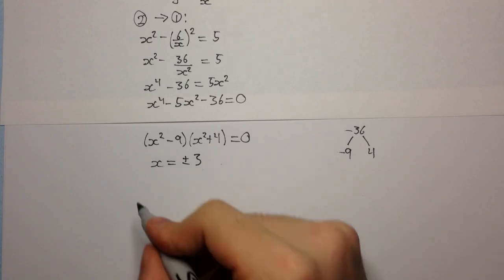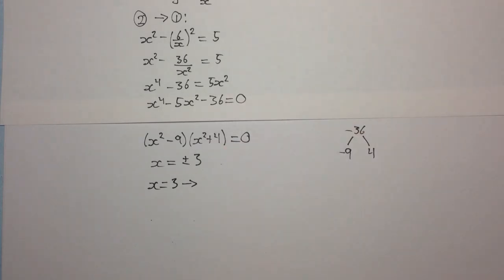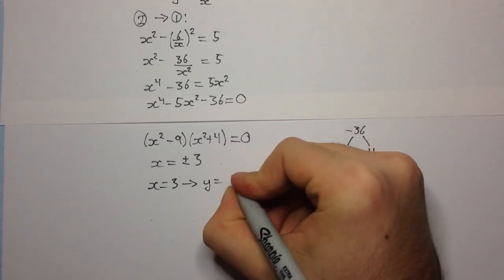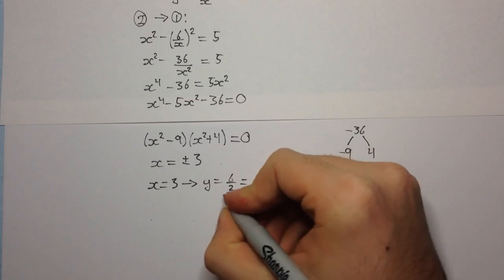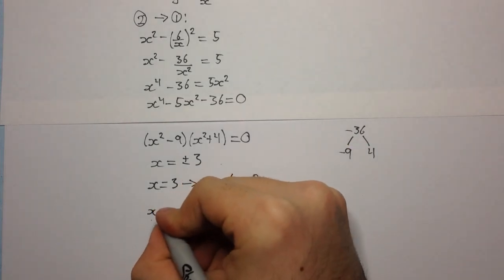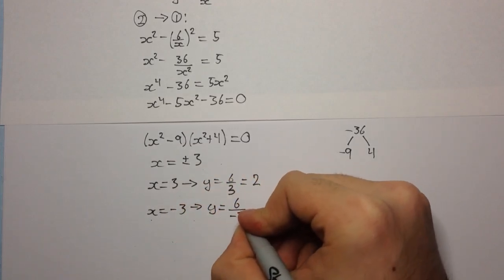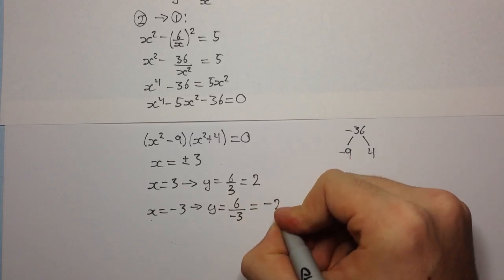So when x is equal to 3 that corresponds when we sub it back into 2 as y equals 6 over 3 which equals 2. When we have x equals to minus 3 that corresponds to y equals 6 over minus 3 which equals minus 2.